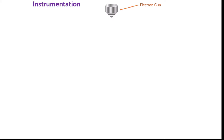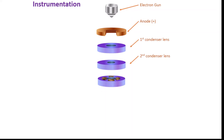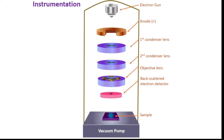Now let's see the instrumental setup of the scanning electron microscope. It starts with the electron gun, which is the main source of electrons. Then there is the anode, which is positively charged, and its function is to guide the produced electrons from the electron gun. Then the first and second condenser lenses give a proper shape to the electron beam. It then passes through the scanning coil or objective lens. There is also a backscattered electron detector, and the sample sits on the sample stage. The total system must be in proper vacuum.